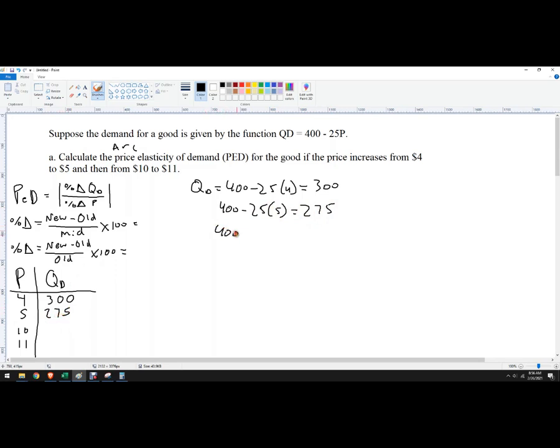The next one is 400 minus 25 times 10, so that's 250, which equals 150. And then finally, 400 minus 25 times 11. I did this on a calculator before, so it's actually 125.